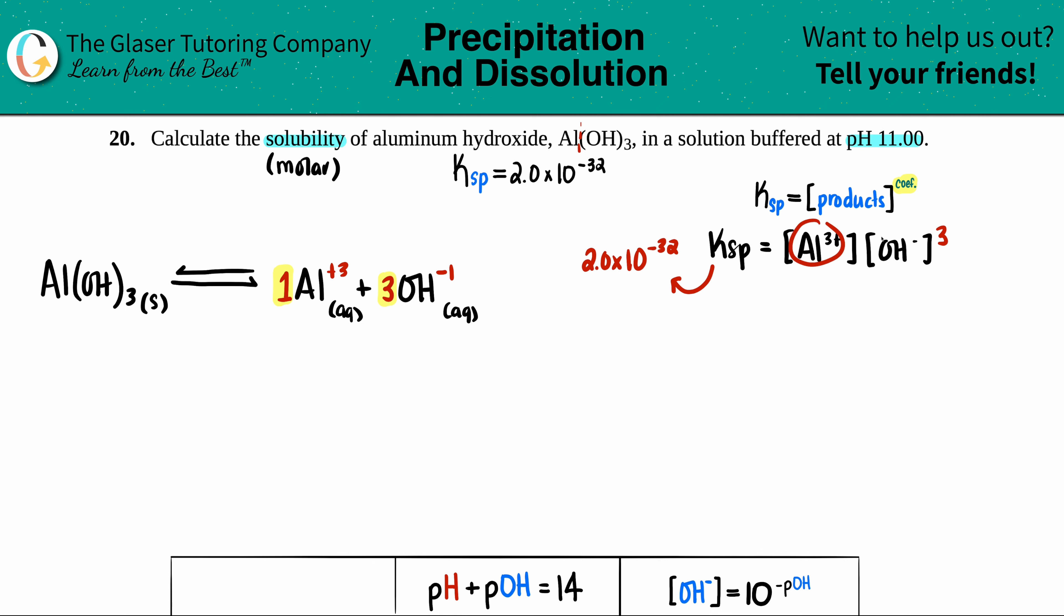But we don't know what the concentrations of the Al³⁺ and the OH⁻ are. So we need to put in variables. But this is where we go back to the question to see if there was any additional information. They did say that we were already in a solution that had a pH of 11. So I say to myself, why did they give me this information? Can I go from a pH to an aluminum concentration? No. But can I go from a pH to a hydroxide concentration? You got it. This was last chapter. The first thing we have to do is find out what that pOH is, and then we can find out the hydroxide concentration.